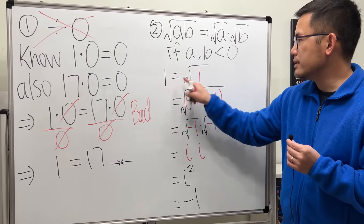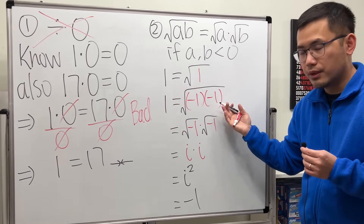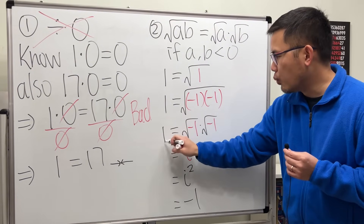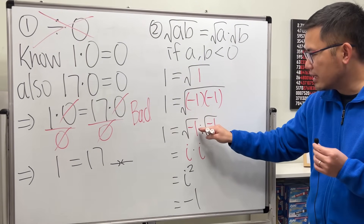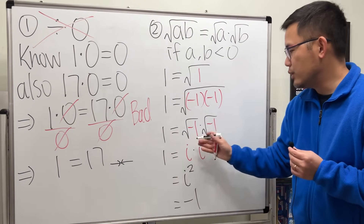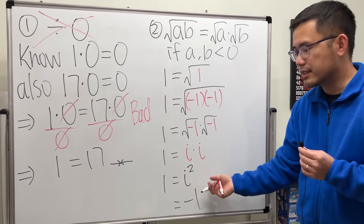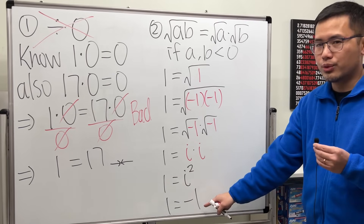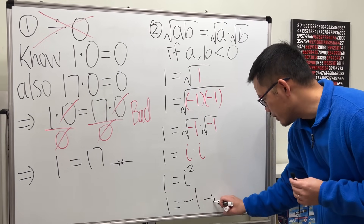i times i gives us i squared. By definition, i squared equals negative one. So we are saying one equals square root of one, which led us all the way to one equals i squared, and at the end we are saying that one equals negative one. Of course, this is a contradiction.